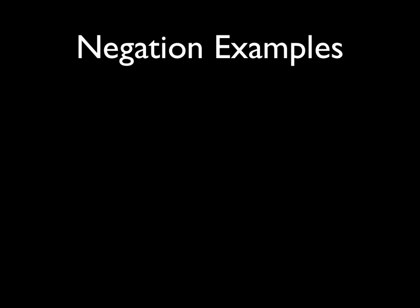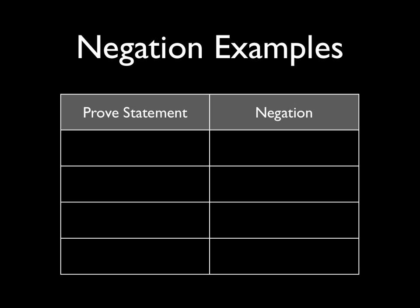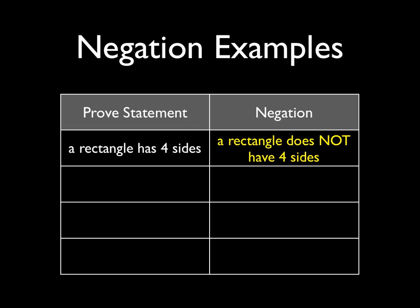That first step — taking the negation of a statement — let's work through a few examples. If we want to prove that a rectangle has four sides, the negation, of course, is that a rectangle does not have four sides. Don't specifically say three, don't specifically say five — just 'not four.'